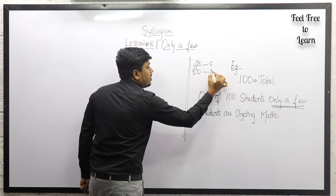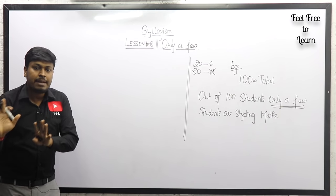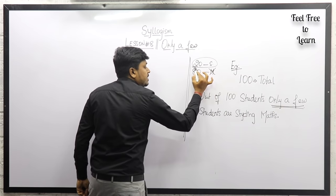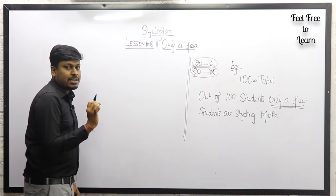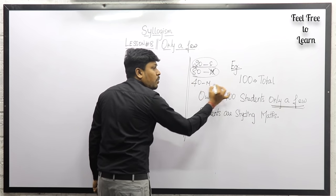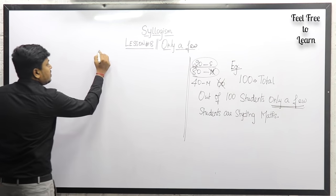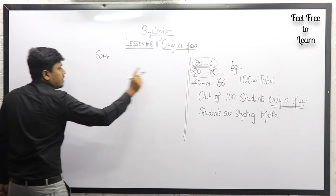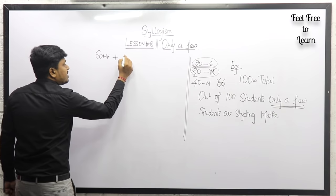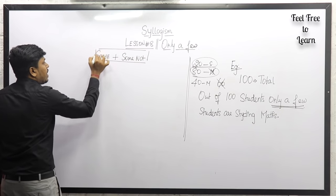If 20 students are studying mathematics, then the remaining 80 students definitely will not study mathematics, because they are saying 'only a few.' In case 40 students are studying mathematics, the remaining 60 definitely will not study mathematics. So the meaning of 'only a few' is: some students will study maths, plus some students will not study maths — which is 'some not.' The combination of 'some' and 'some not' is called 'only a few.'